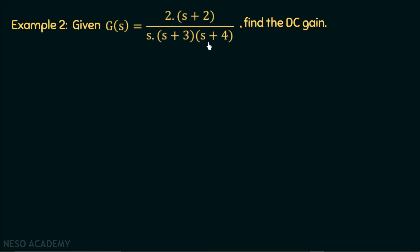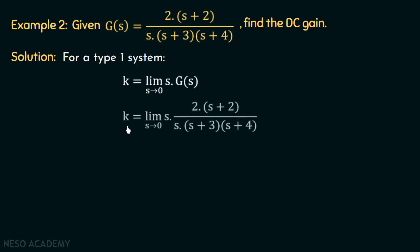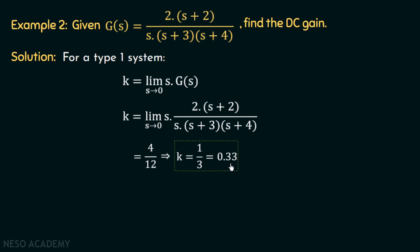For a type 1 system, the DC gain k is equal to the limit as s tends to 0 of s multiplied with G(s). Substituting the value of G(s), we will have k equal to the limit as s tends to 0 of s multiplied with 2(s plus 2) over s(s plus 3)(s plus 4). This s and this s will get cancelled, and when we substitute the limit s tending to 0, we will have 4 over 12, giving k equal to 1 over 3, which is 0.33. We will understand the significance of this expression in chapter number 3 on time response analysis; for now, take this as a formula for the DC gain of a type 1 system.